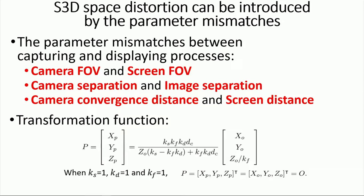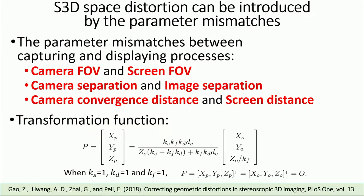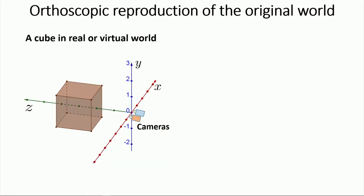We formulated such distortion as a transformation function, as shown here. If anyone is interested in how it was derived, you may read our previous paper referenced below. Anyway, here I will show you how such 3D space distortion looks like using a cube.